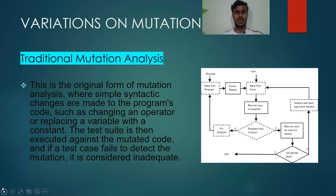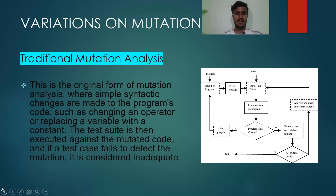Traditional mutation analysis is the original form of mutation analysis, where simple syntactic changes are made to the program's code — such as changing an operator or replacing a variable with a constant. The test suite is then executed against the mutant code, and if a test case fails to detect the mutation, it is considered inadequate. This is illustrated in the basic diagram of traditional mutation analysis.